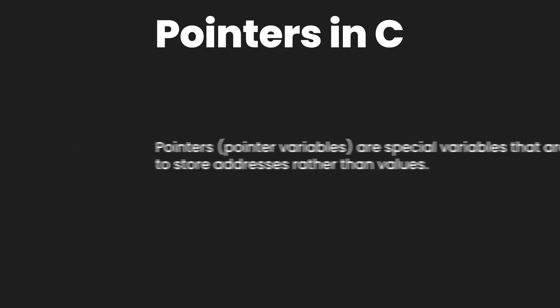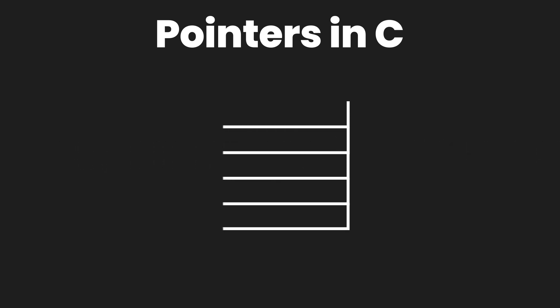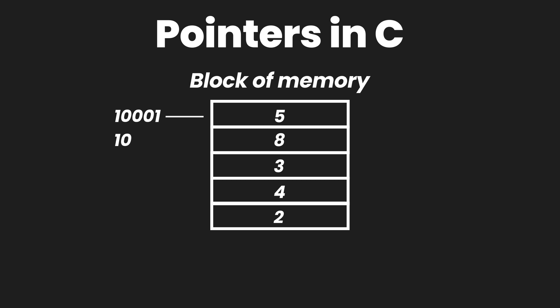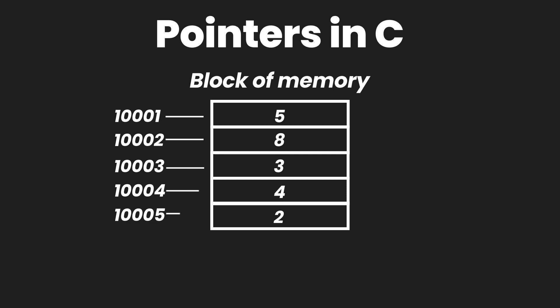To better demonstrate this, look at this visual representation being displayed on your screen. You can see that we have a block of memory, and this block of memory contains some values inside it such as 5, 8, 3, 4, and 2. The memory blocks have their respective addresses as well — for example, the first one has the address 1001, the second one has the address 1002, and so on. These are not the actual memory addresses; we are just taking them as an example.